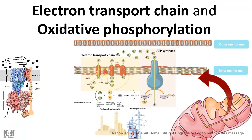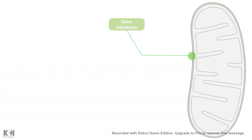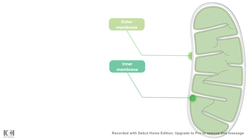In this video, we would look at electron transport chain and oxidative phosphorylation. Before we begin, let's just refresh our memory about the mitochondrial structure. The mitochondria has two membranes, the outer membrane and the inner membrane. The inner membrane is invaginated, forming the cristae.